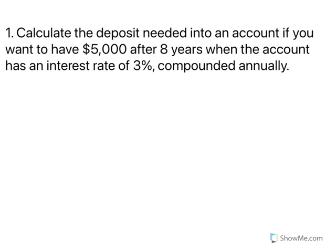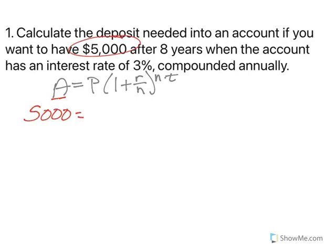Let's do some examples. Let's calculate the deposit needed into an account if you want to have $5,000 after eight years when the account has an interest rate of 3% compounded annually. So first, let's again just kind of think through our formula. And let's then talk about what each of these values represent. So A is our ending amount. We want to have $5,000 at the end. We're trying to find the deposit needed. That's the initial principle.